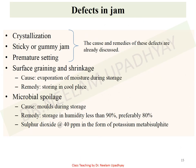The defects in jam are: crystallization, sticky or gummy jam, premature setting, surface graining and shrinkage, and microbial spoilage. Crystallization, sticky or gummy jam, and premature setting have already been discussed while talking about the steps involved in preparation of jam. Surface graining and shrinkage is caused by evaporation of moisture during storage; it can be prevented by storing jams in a cool place.